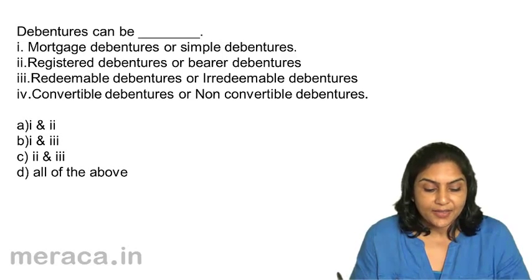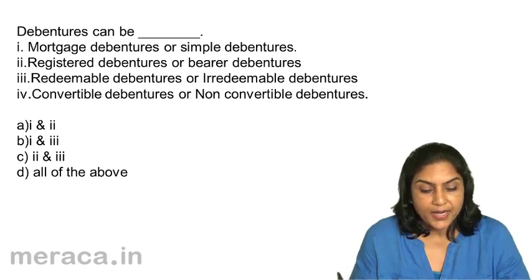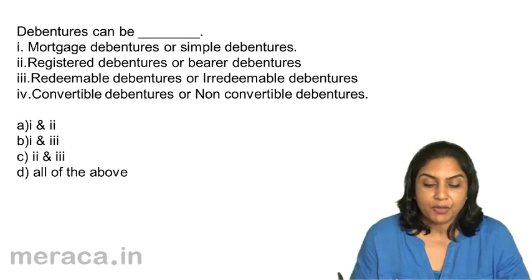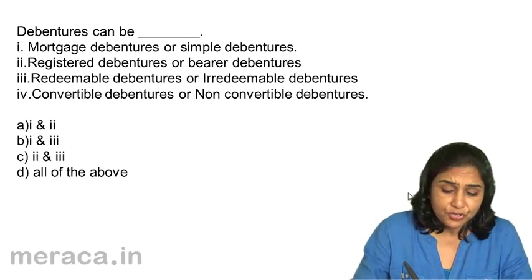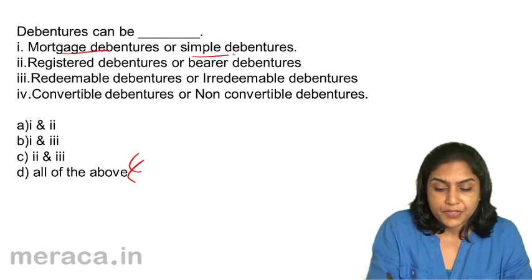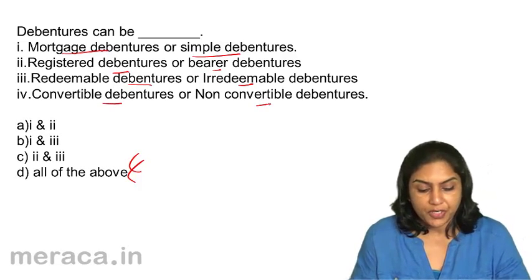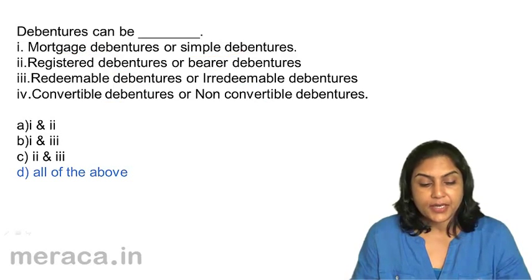The options are: A. 1 and 2 — mortgage, simple, registered and bearer. B. 1 and 3 — mortgage debentures are simple and redeemable and irredeemable. C. 2 and 3 — registered, bearer, or redeemable and irredeemable. D. All of the above. The correct answer is all of the above, because debentures may be mortgage or simple, they may be registered or bearer, they may be redeemable or irredeemable, and they may be convertible or non-convertible. D is the correct answer.